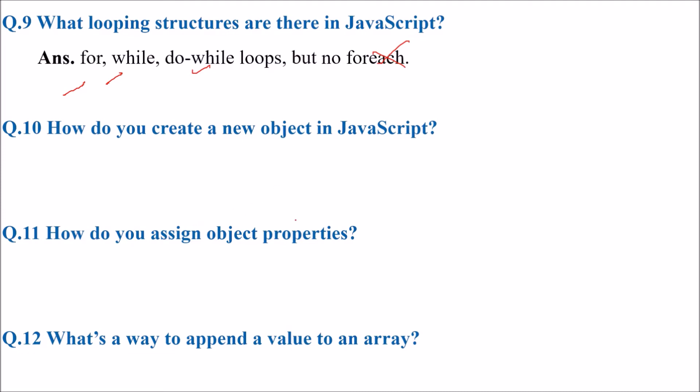How do you create a new object in JavaScript? For that you use var object, new object, or you can directly do in shortened form like obj equals curly brackets.